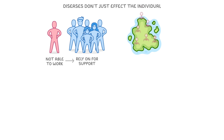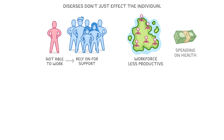On a national scale, if there's more disease, then the workforce will be less productive, and a bigger share of government spending will have to be spent on health. In order to try and reduce this burden of disease, scientists first need to find out who catches each type of disease and why. And what they've found is that certain groups of people are more likely to have certain risk factors than others, so those groups have a higher incidence of the associated diseases.